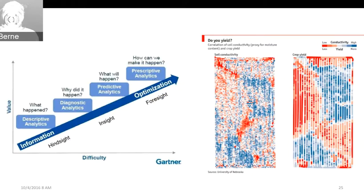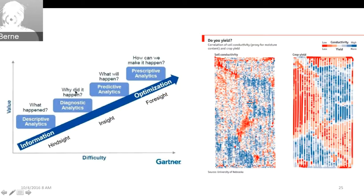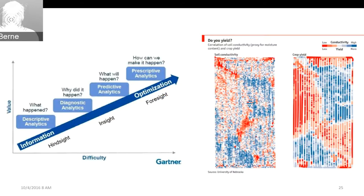Another aspect of data is what you do with it. You can look back at what happened — say, you expected a certain yield but didn't get it — and ask what happened: was it drought, flooding, not enough fertilizer? Then you want to find out why it happened, using expert data systems. Then you ask what will happen in the future — for example, expecting continued drought and its impact on your farm. And then you move up into prescriptive — what do I do about this? We'll go into this in much more detail in the March webinar.